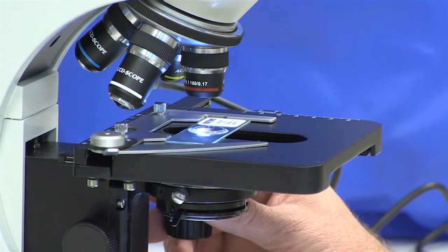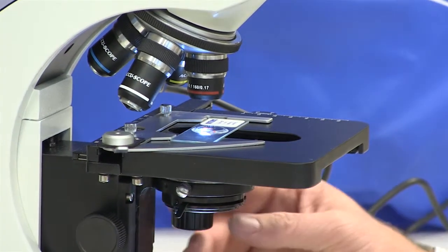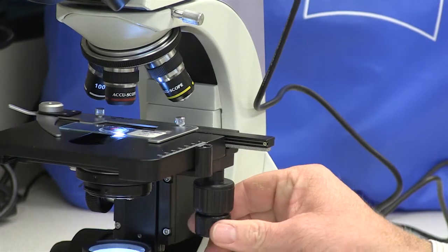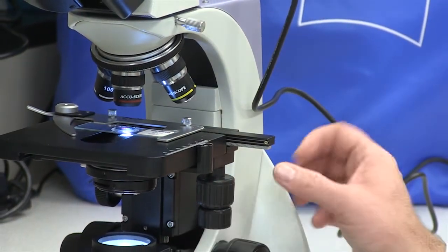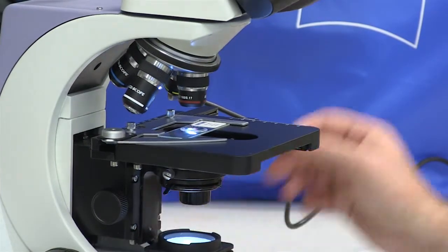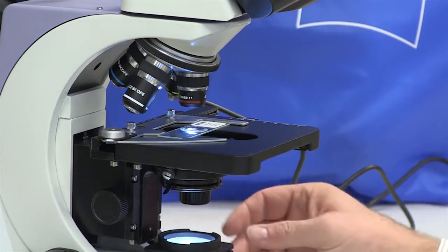Then I'm going to manipulate the mechanical stage knobs, which are on the other side of the microscope from you. I'm going to manipulate them so that the colored threads are in the center of the circle of light coming through the stage.